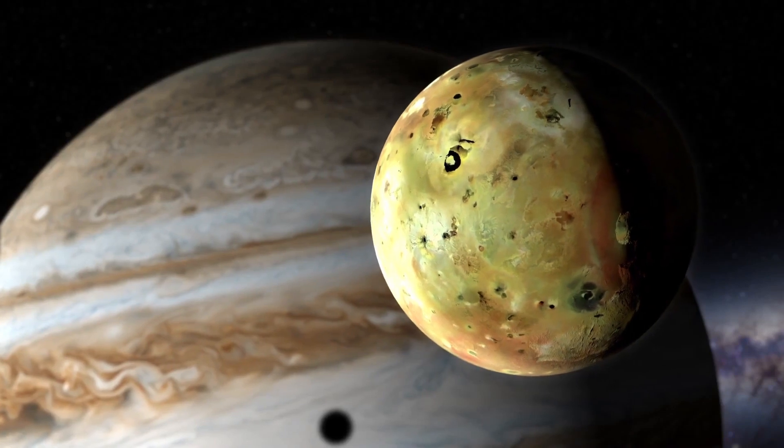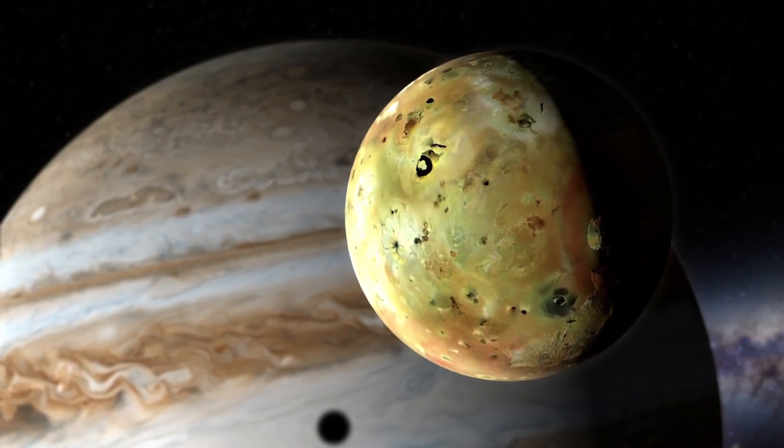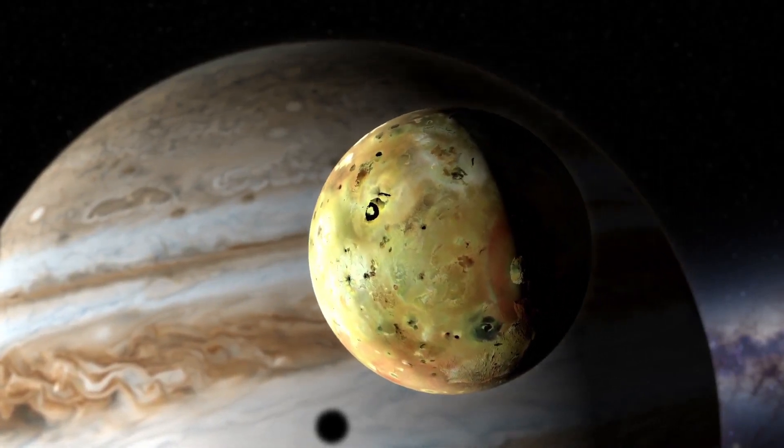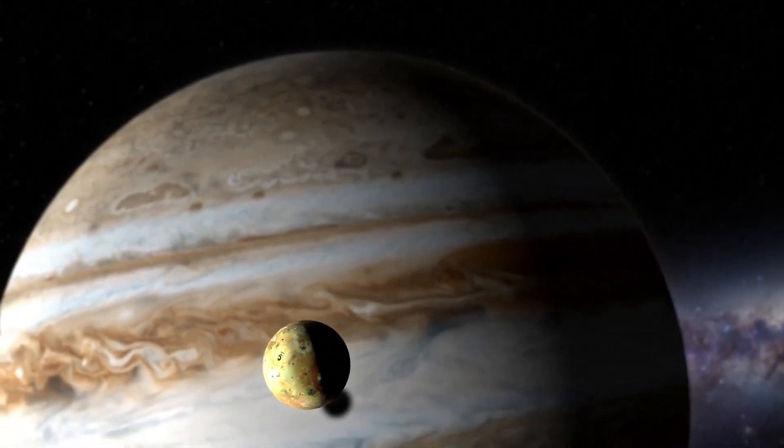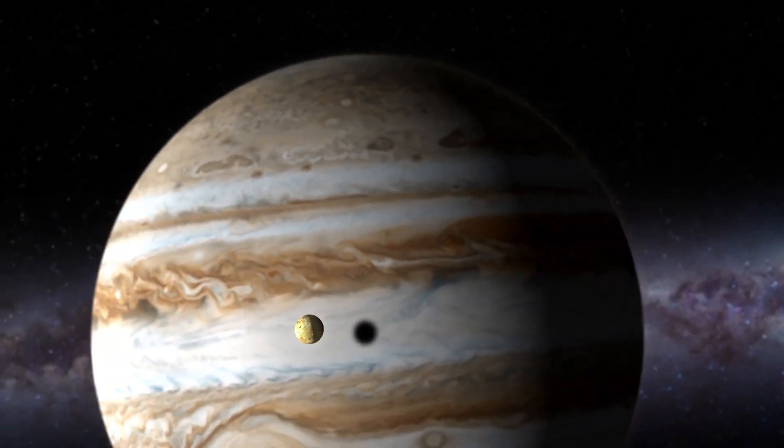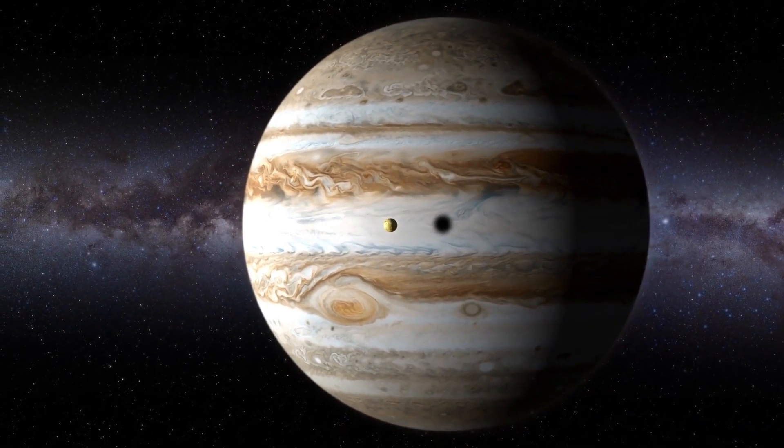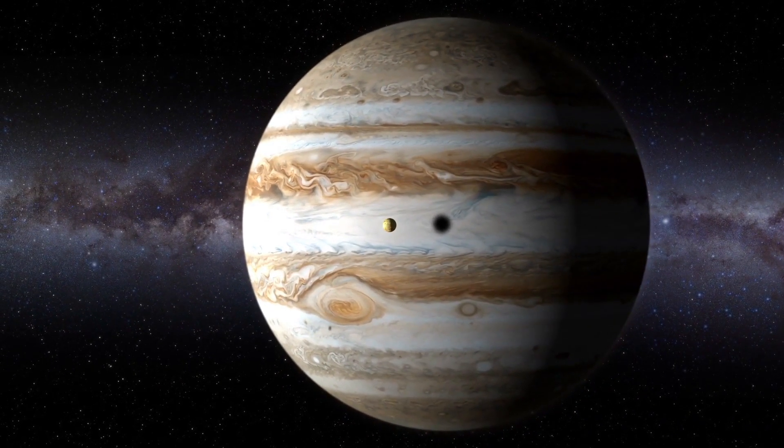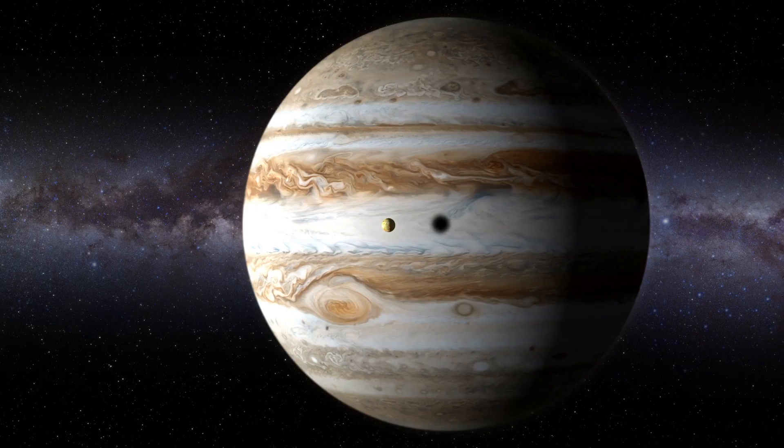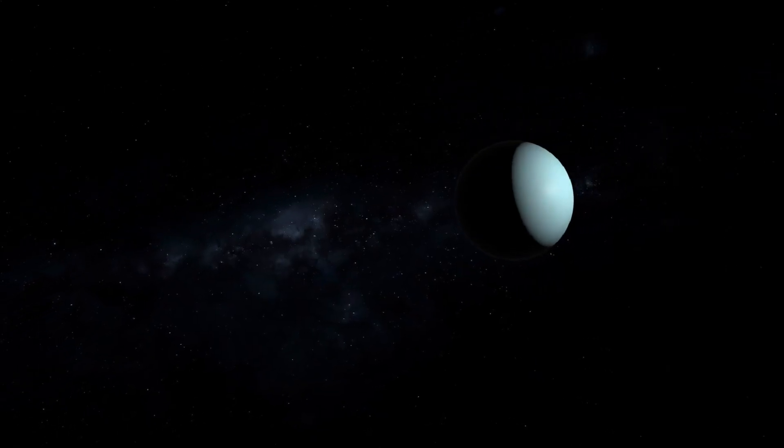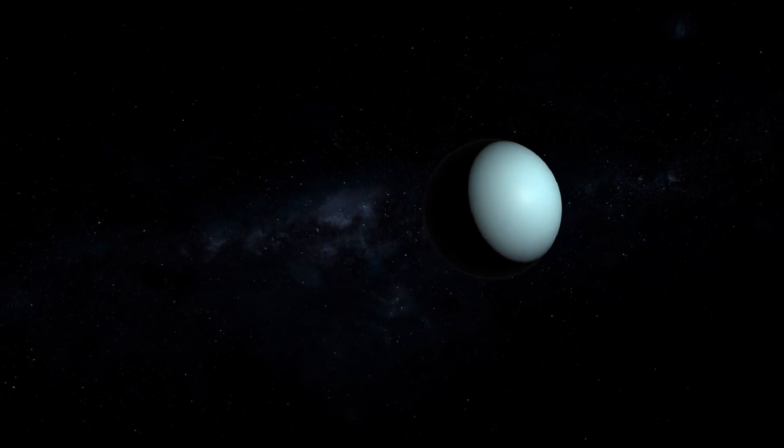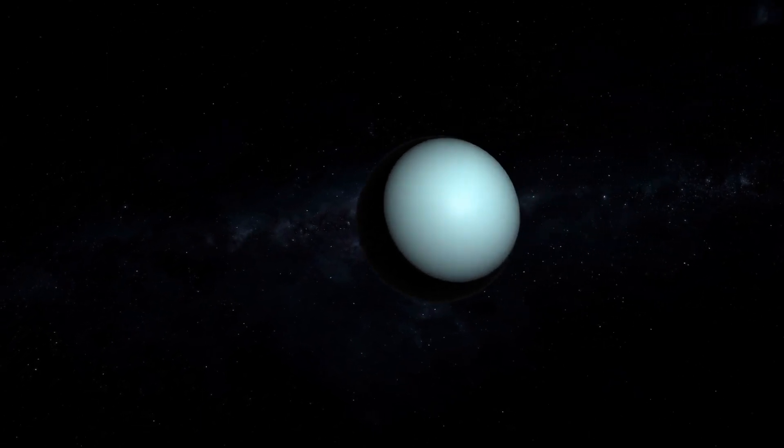It also orbits a yellow dwarf star much like our own. Only Kepler-1126b is 2.5 times closer to its star than Earth is to the Sun. But that's no big deal, because the star Kepler-1126b orbits is cooler than ours. So the habitable zone would exist in a range much closer in proximity to it.